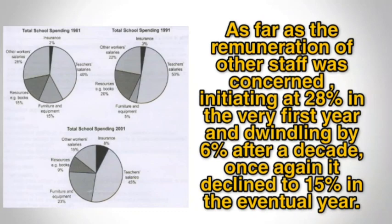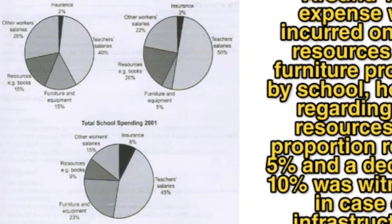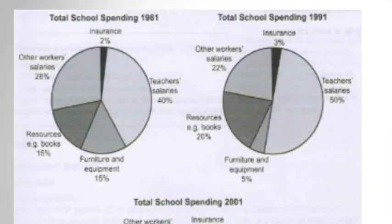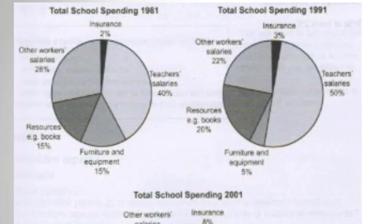Now we move to the second body paragraph. Around 15% of expense was incurred on both resources and furniture provided by the school in 1981. Resources accounted for 5% more and furniture/equipment for 10% of the spending.